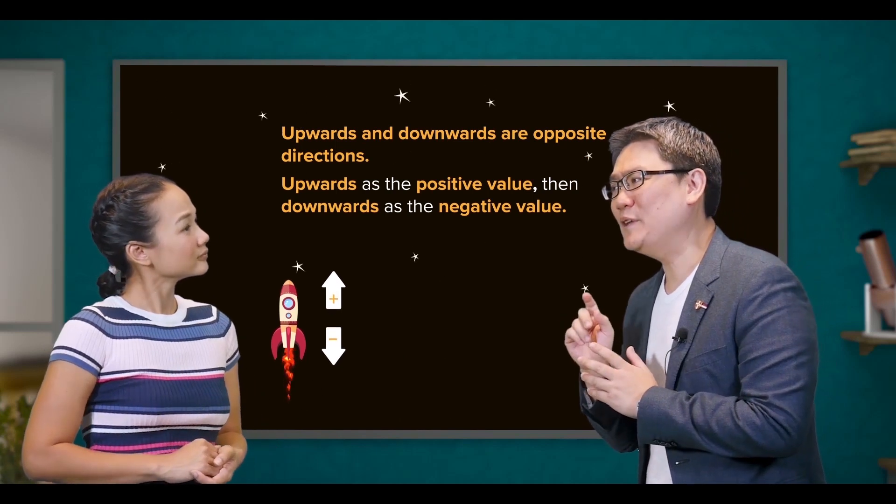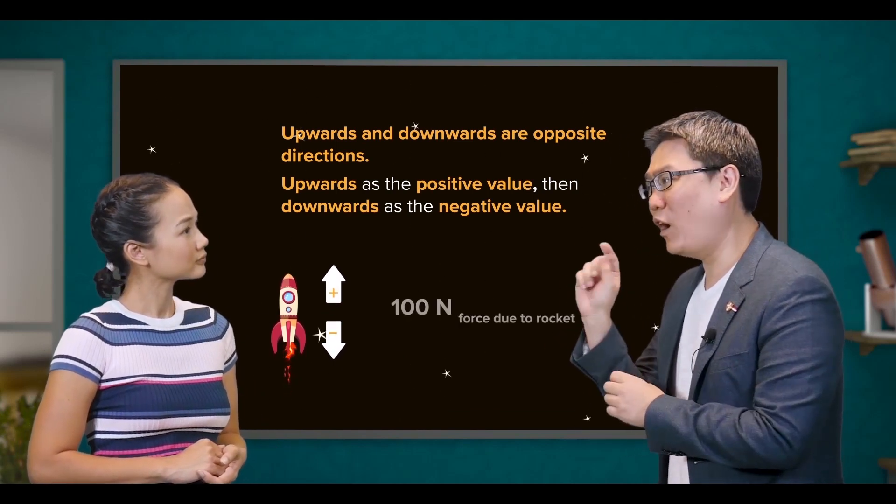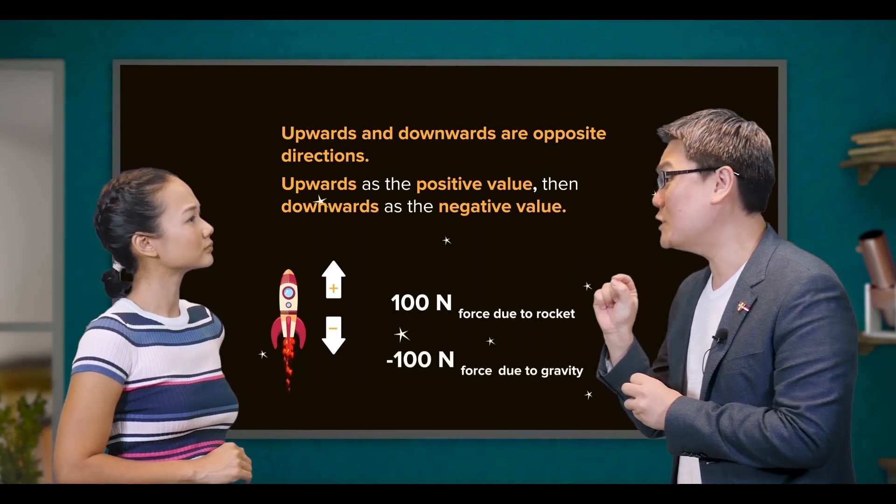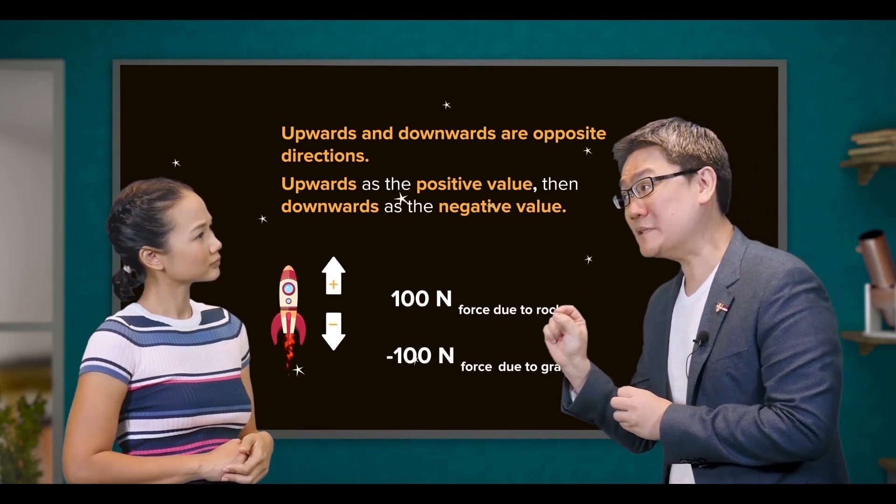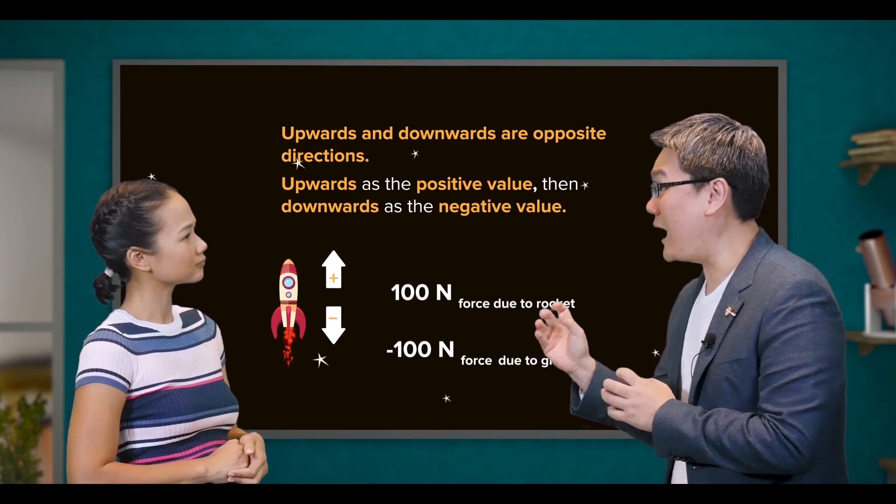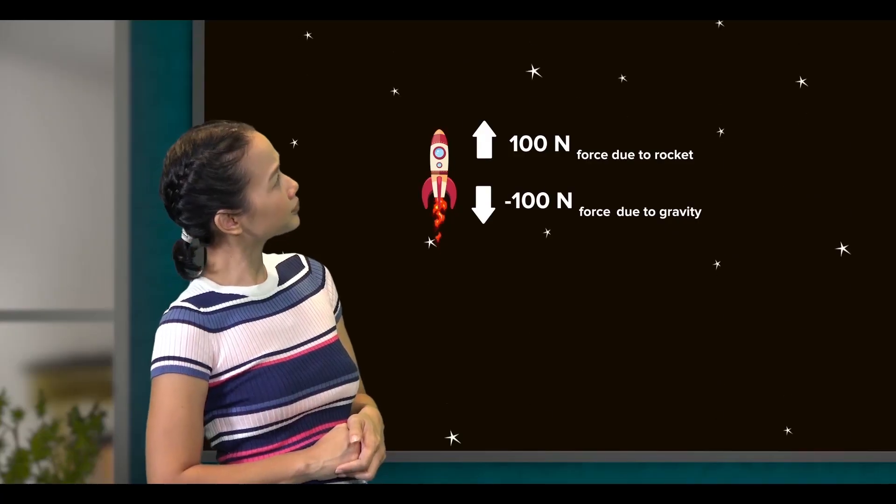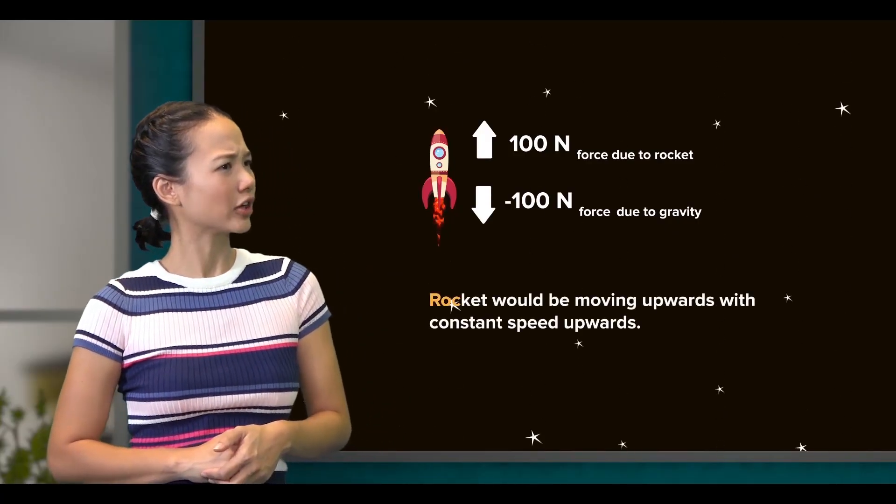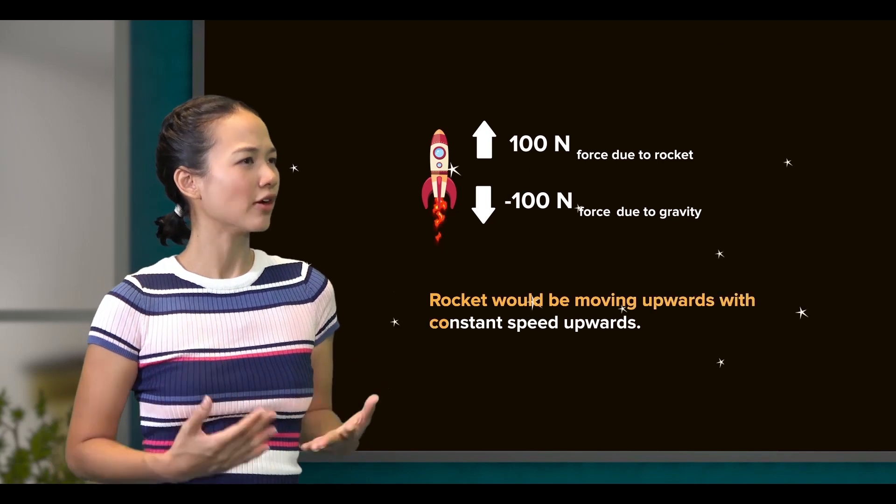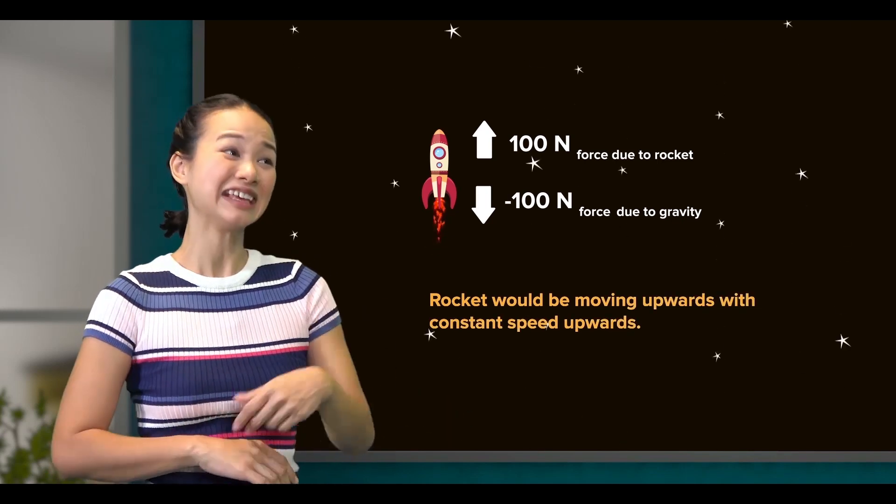What would happen if the upward thrust of the rocket and gravitational force are equal and opposite, and the rocket has an initial speed upwards? That means the rocket will be moving upwards with constant speed. Easy.